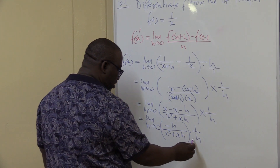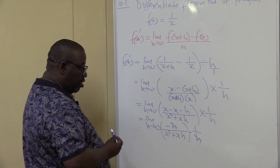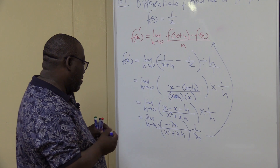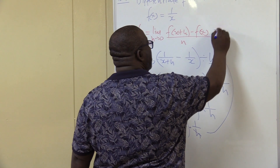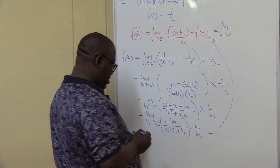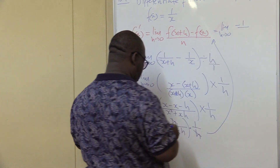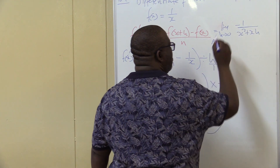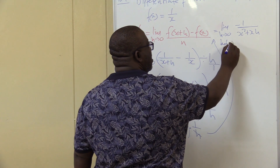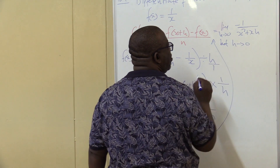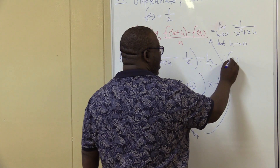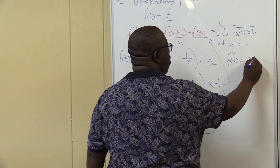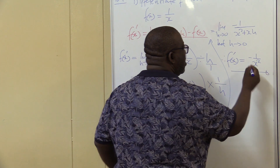I can see that the h in the numerator cancels with the h in the denominator, leaving minus 1 on the numerator. This becomes the limit as h approaches 0 of minus 1 over x squared plus xh. As h approaches 0, we push in 0, so xh disappears. We're left with minus 1 over x squared. This is how you deal with fractions.